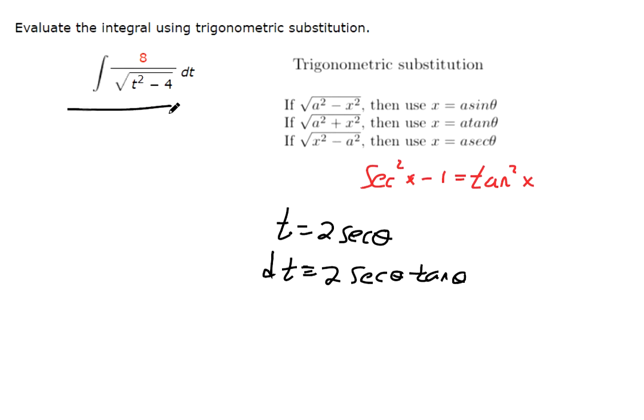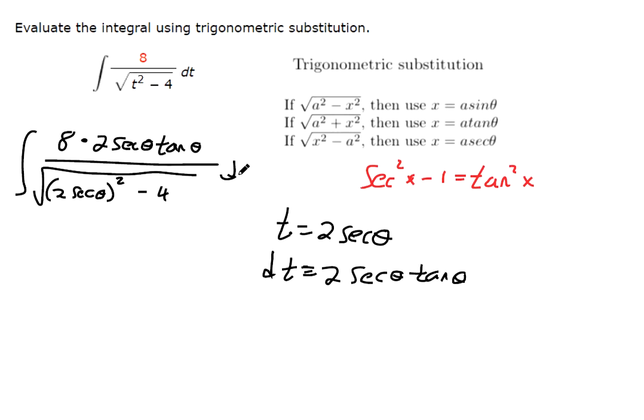And now we can rewrite this in terms of theta. Now we have a substitution for t and for dt. So this is 8, and then times our dt was 2 secant theta tangent theta. Now in the denominator, that's the square root of 2 secant theta squared minus 4. This is all with respect to theta.